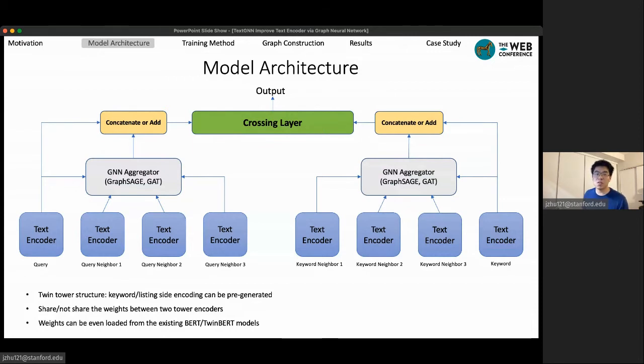We designed the structure of the TextGNN model to be simple, effective, and efficient, which is a natural extension of the high-performance CDSSM or TwinBERT baseline model with additional information from graph structure data. We augment the input query and keywords, each with three additional neighbors, that go through the same text encoder, and then having an additional step of GNN aggregation.